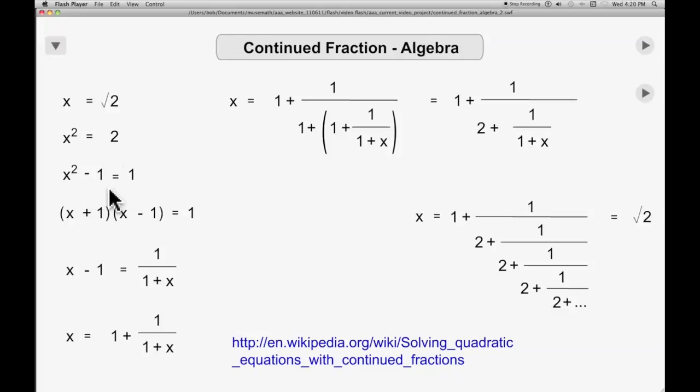Subtract 1 from each side, and now you can factor it out to x plus 1 times x minus 1 equals 1. Divide each side by x plus 1, and you get x minus 1 equals this. Now you add 1 to each side, and you've got x equals 1 plus 1 over 1 plus x.